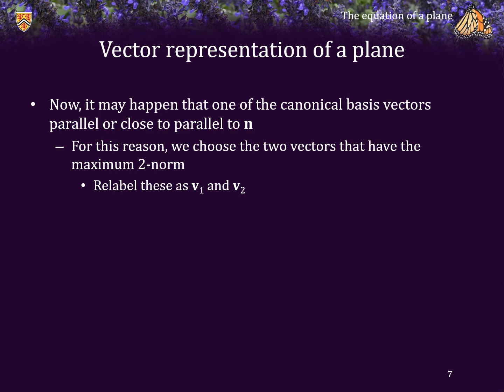Consequently, we will choose the 2 out of the 3 vectors that have the largest 2-norm. Now, we will relabel these as V1 and V2. We've calculated V1 through V3, we calculate the 2-norm of each of them, and whichever 2 have the largest 2-norm, we just relabel them as being V1 and V2.